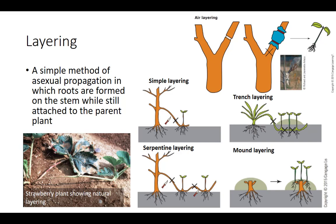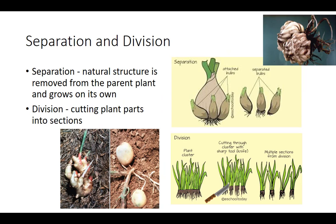Separation occurs when a natural structure is removed from the parent plant and grows on its own — examples are bulbs or corms. Division relies on cutting plant parts into sections as a means of propagation — examples are rhizomes or tubers.